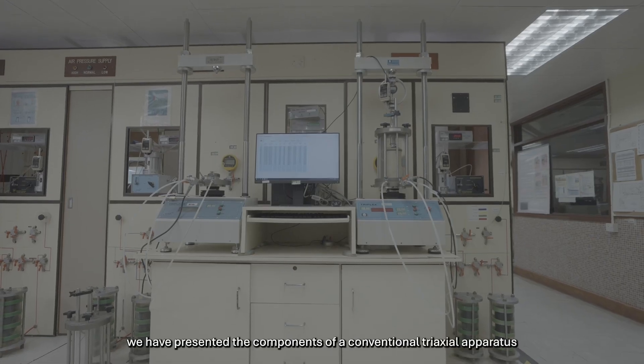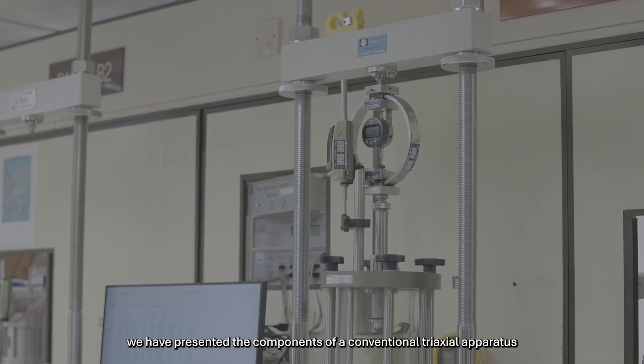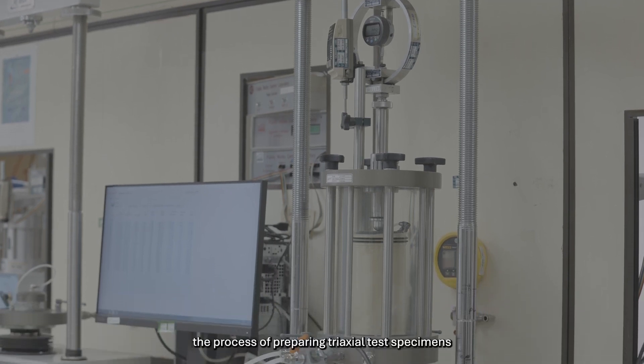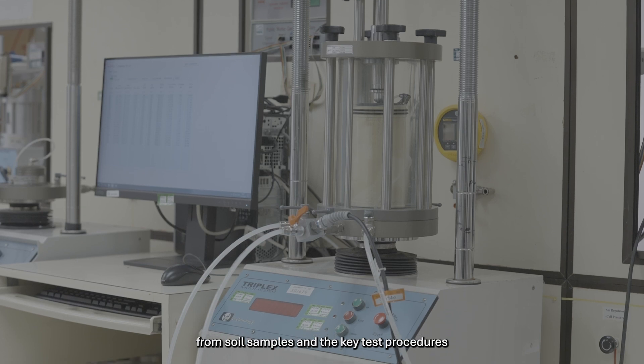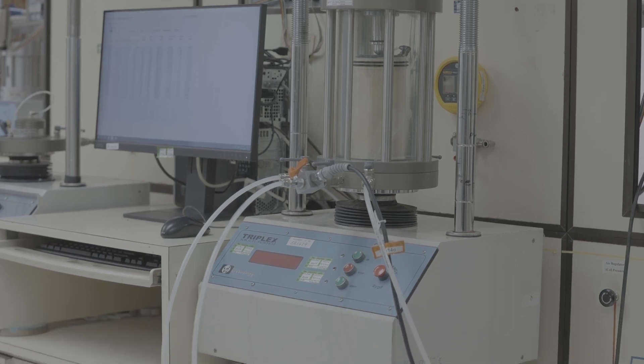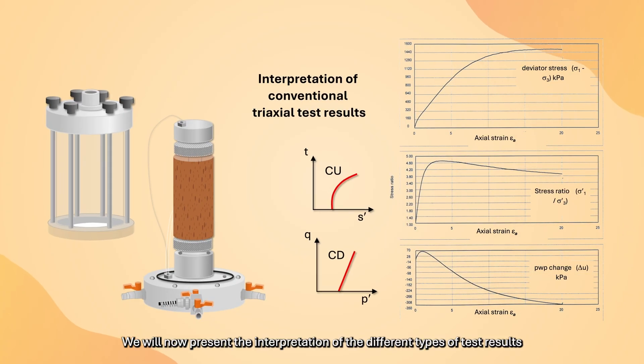In video 8a, we presented the components of a conventional triaxial apparatus, the process of preparing triaxial test specimens from soil samples, and key test procedures. We will now present the interpretation of the different types of test results.